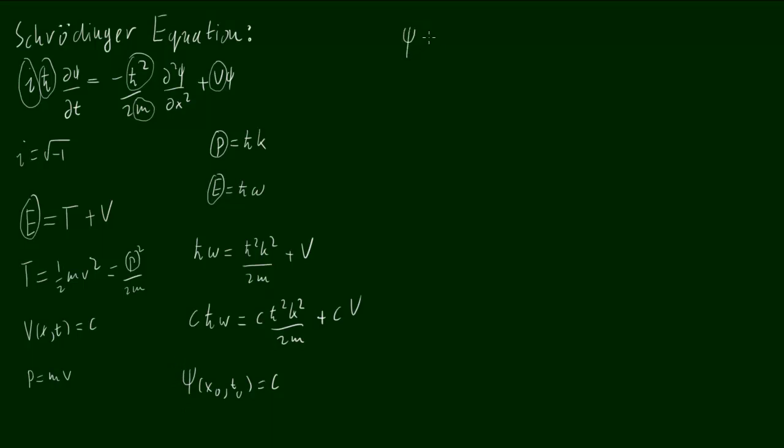So, we can just multiply psi by h-bar omega, and that will still equal psi times h-bar squared k squared over 2m plus psi V.